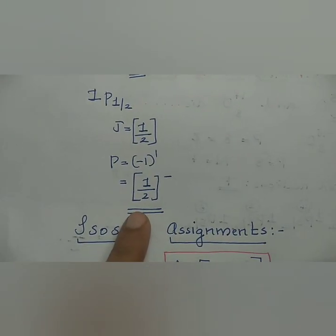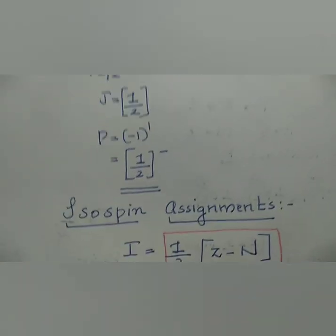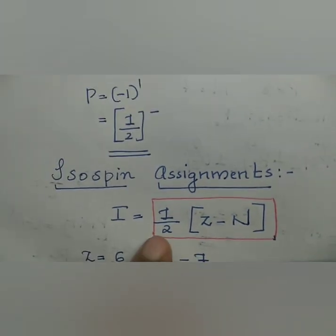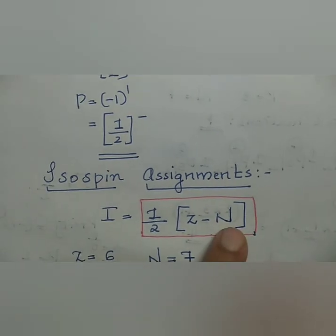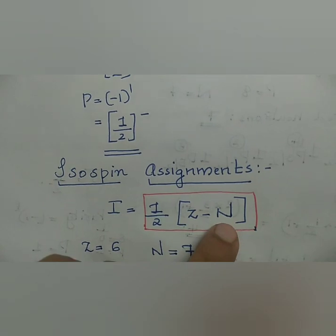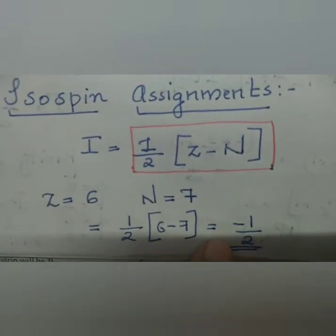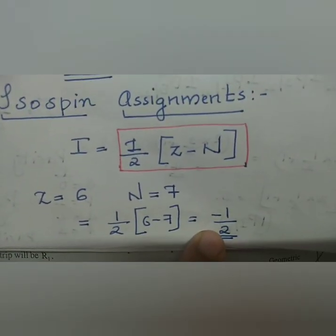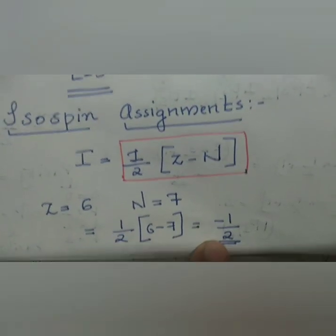Now we have spin parity. For isospin assignment, the equation is half times Z minus N. Z is the atomic number and N is the number of neutrons. So half times 6 minus 7, which is half times minus 1, equals minus 1/2. The isospin assignment is minus 1/2.